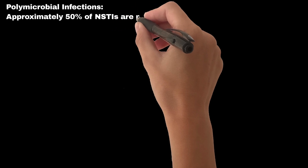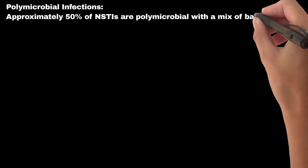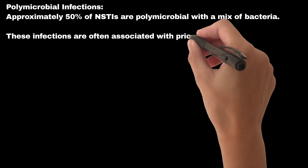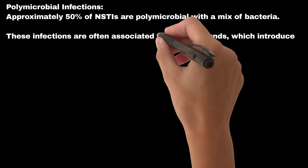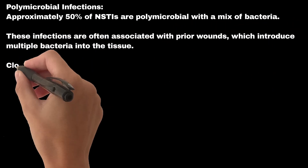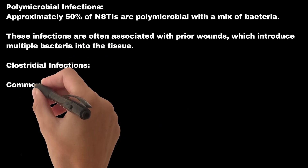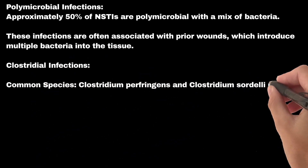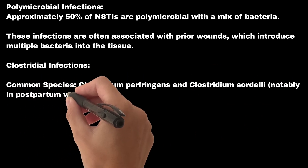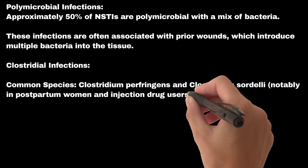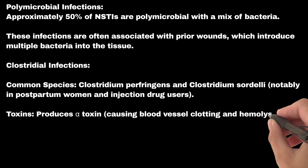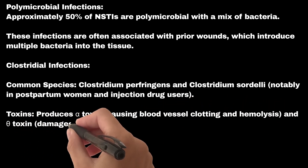Polymicrobial infections account for approximately 50% of NSTIs and are often associated with prior wounds that introduce multiple bacteria into tissue. Clostridial infections — common species include Clostridium perfringens and Clostridium sordellii, notably in postpartum women and injection drug users. Toxins produced include alpha-toxin, causing blood vessel clotting and hemolysis, and theta-toxin, which damages heart muscle.